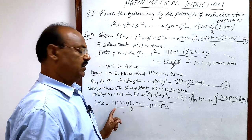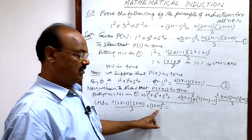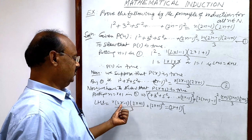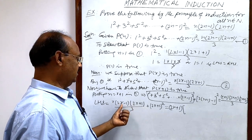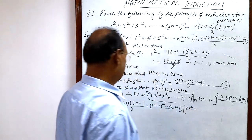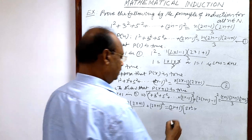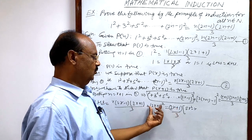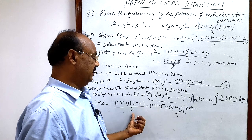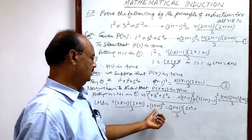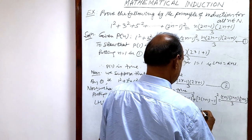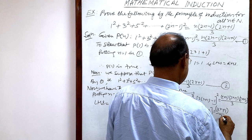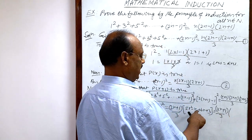Now we take (2R+1) common from both terms. With LCM of 3, we get (2R+1)/3 × [R(2R−1) + 3(2R+1)], which gives (2R+1)/3 × [2R²−R + 6R+3] = (2R+1)/3 × (2R²+5R+3).